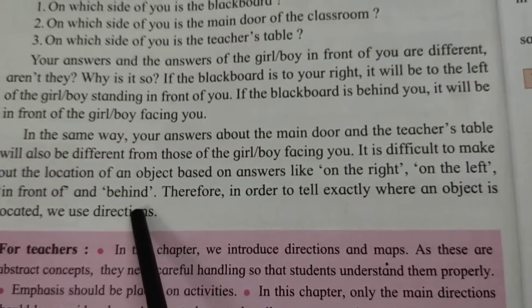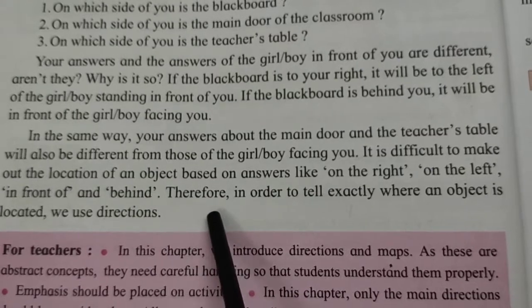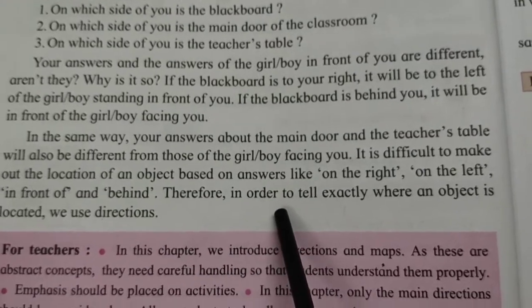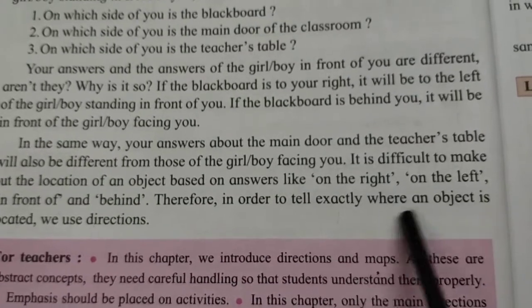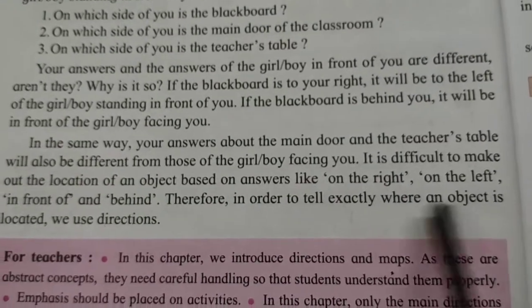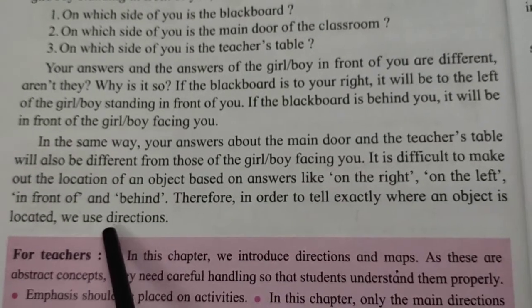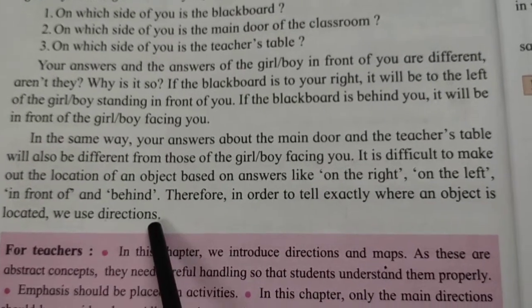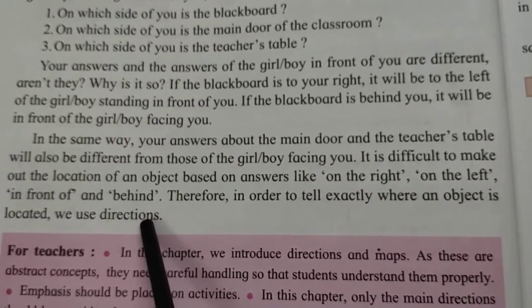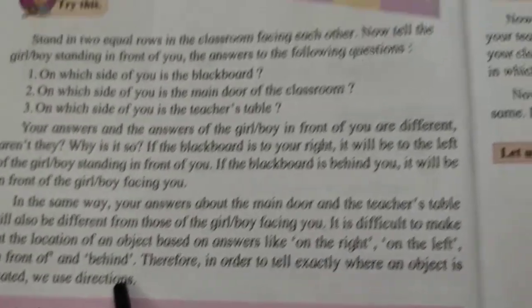Therefore, in order to tell exactly where an object is located, we use directions. There are four main directions: East, West, North, and South.